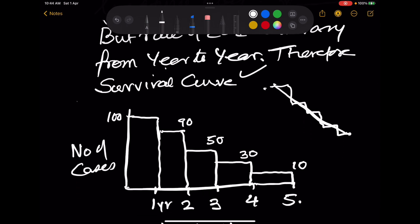Here in this curve you find that there were 100 patients. At the end of 1 year they were 90. At the end of 2nd year they were 50. At the end of 3rd year they were 30. And at the end of 4th year they were only 10.